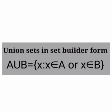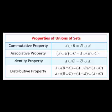The union of sets in set-builder form can be expressed as: A union B is equal to {x : x belongs to A or x belongs to B}. Properties of union of sets include the Commutative property: A union B is equal to B union A.